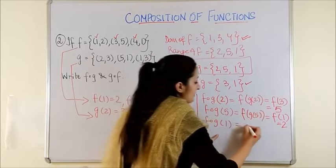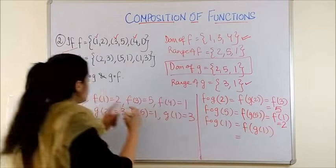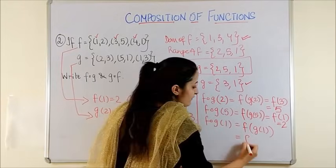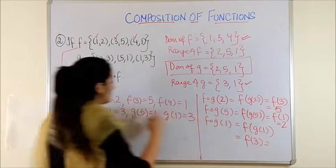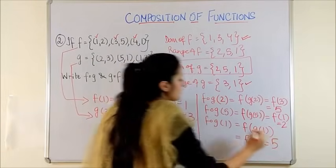Now, continuing with the third part, F of G of 1 which gives us G of 1 is 3. So F of 3 further gives us the answer as 5.